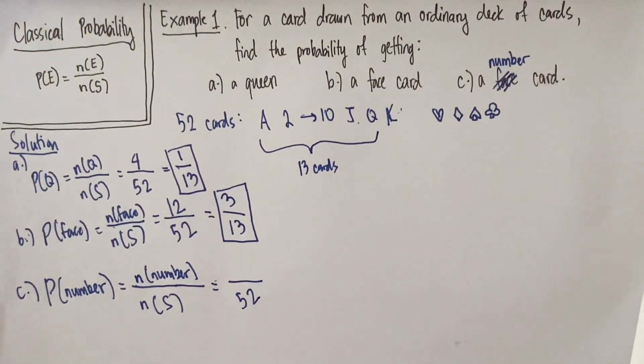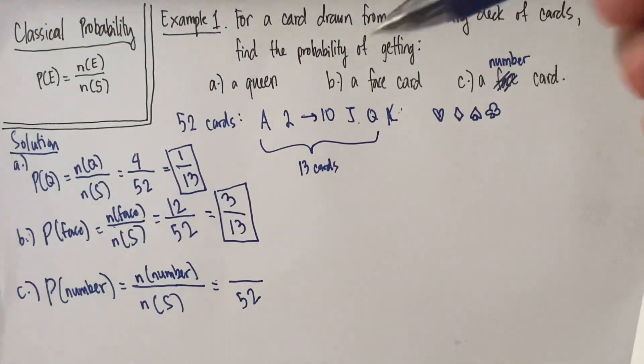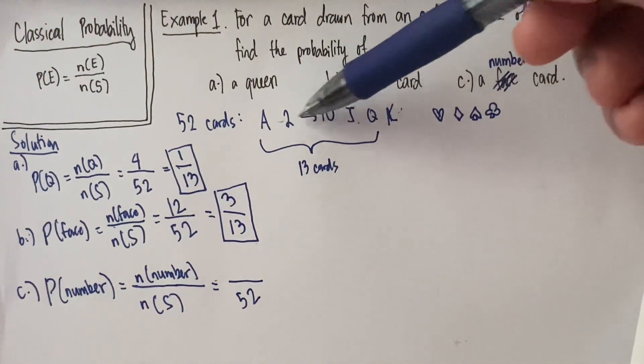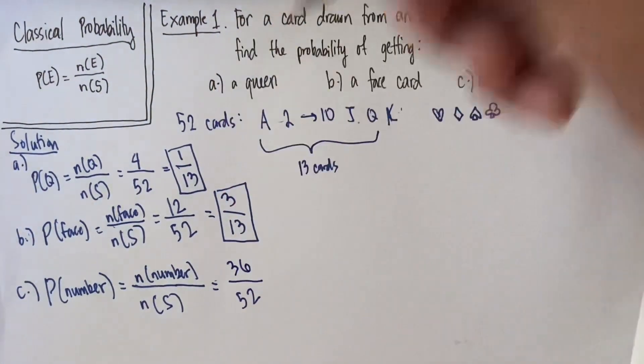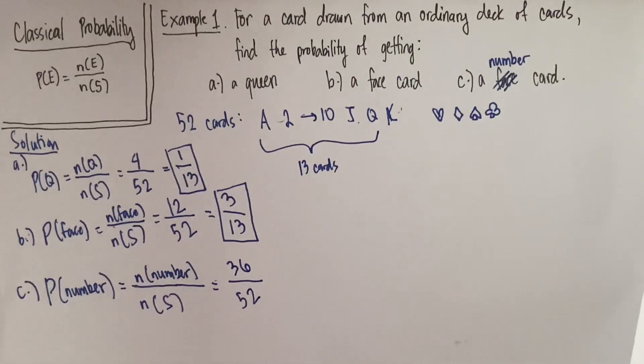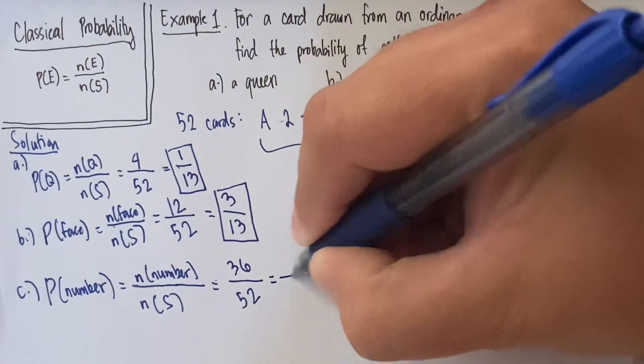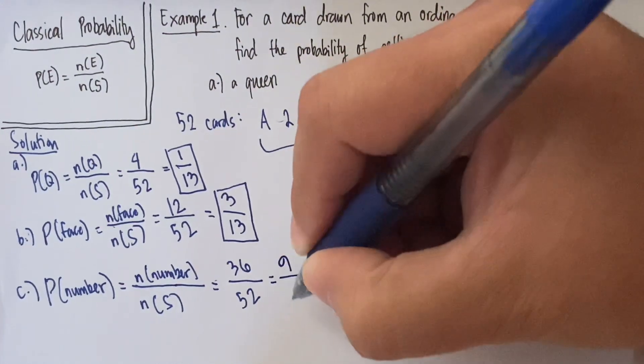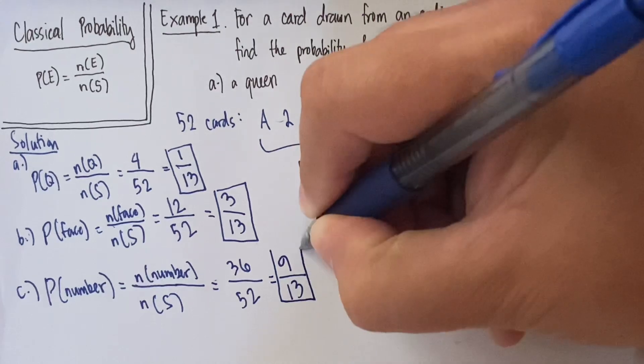So we start with 2 to 10. That's 9 of them, 9 per suit. And we're going to multiply 9 by 4. That's going to give us 36. So that gives us 36 over 52. Still, this is divisible by 4. So let's have 36 divided by 4, which gives us 9, and 52 divided by 4 is 13. And that's our answer for letter C.